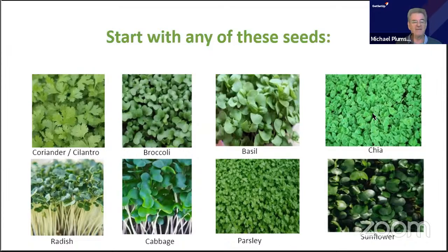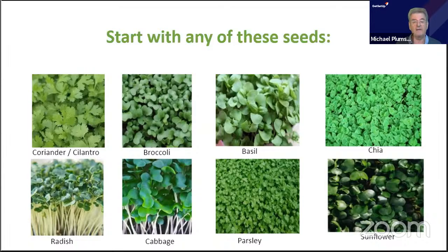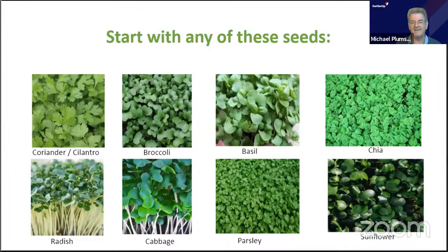Basil microgreens are a good source of protein — if you're vegan and need protein, basil must be one of your main ingredients. It's also high in vitamin E and niacin — something you might otherwise get from supplements. It's also quite high in fiber, and contains vitamins A, C, K, B6, and folate.